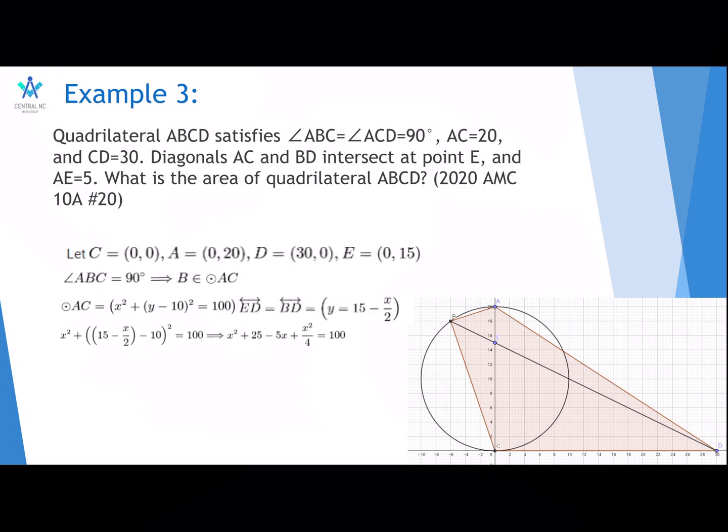You plug the second equation into the first equation to get X squared plus 25 minus 5X plus X squared over 4 equals 100. Then you simplify it and cancel the 5s. You get X squared minus 4X minus 60 equals 0. So, X is either 10 or negative 6.